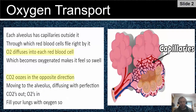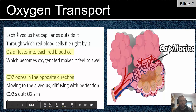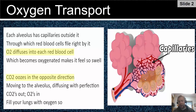Oxygen transport is the name of the game here. We're going to transport oxygen from our lungs to our bloodstream, because the heart can then pump that oxygen-rich blood to the rest of your body. Each alveolus — that's the singular term for alveoli — has capillaries outside it. Red blood cells file by through those capillaries, and O2 diffuses into each red blood cell.